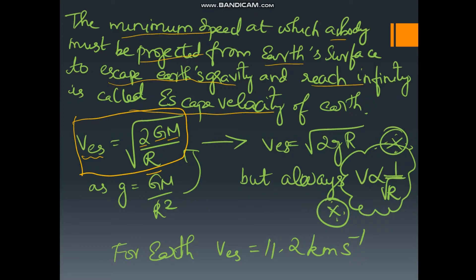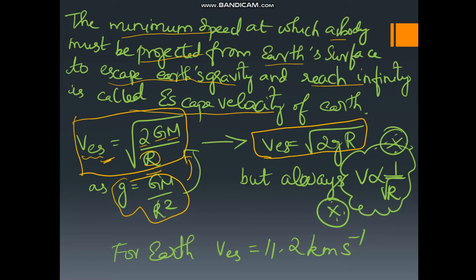We know that g is equal to GM divided by r squared. If we substitute that here, we get v_escape is equal to the square root of 2gr. Note that in the first formula, v is inversely proportional to r, but in this derived formula it appears directly proportional to r.